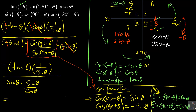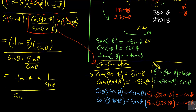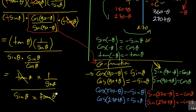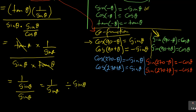Sine over cosine is tan θ, so that cancels, leaving tan θ times 1 over sin θ over sin θ. That simplifies to 1 over sin θ divided by sin θ, which equals 1 over sin θ times 1 over sin θ — because you invert when multiplying.